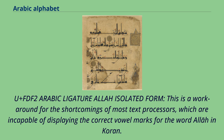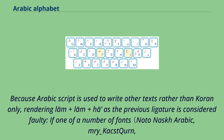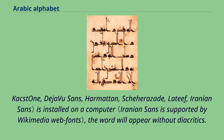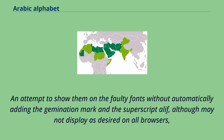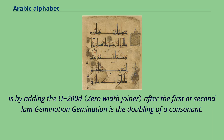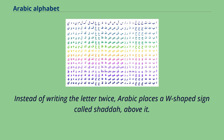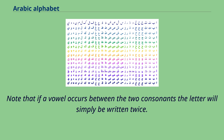Because Arabic script is used to write other texts rather than the Quran only, rendering Lam plus Lam plus Ha as the Allah ligature is considered faulty with certain fonts. Gemination is the doubling of a consonant. Instead of writing the letter twice, Arabic places a w-shaped sign called Shada above it. Note that if a vowel occurs between the two consonants, the letter will simply be written twice. The diacritic only appears where the consonant at the end of one syllable is identical to the initial consonant of the following syllable.